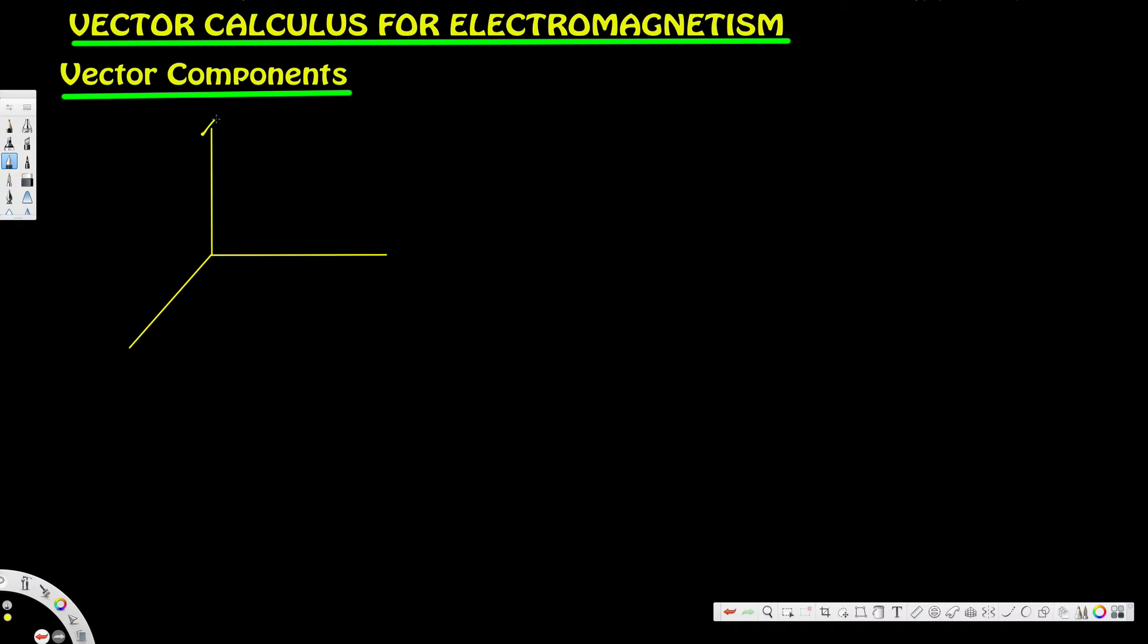This is our z component, this is our y component, and this is our x component. When we talk about vector components, we talk about basis first. There are three bases: i hat, j hat, and k hat.